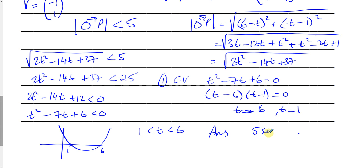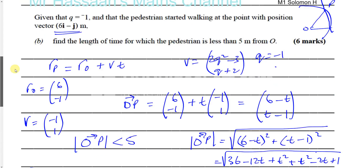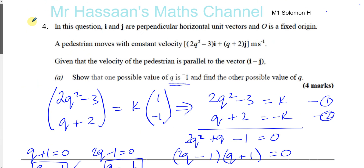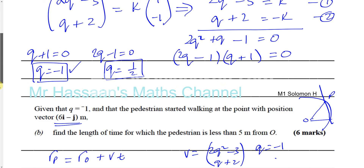So the answer is 5 seconds — the pedestrian is less than 5 meters from O between t = 1 second and t = 6 seconds. That's the answer to question number 4 in Solomon H.